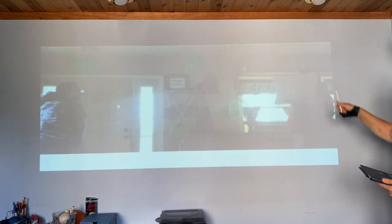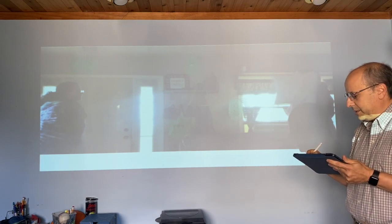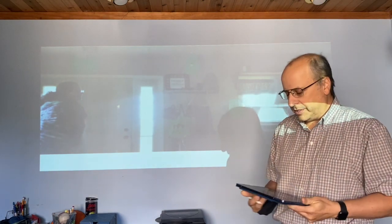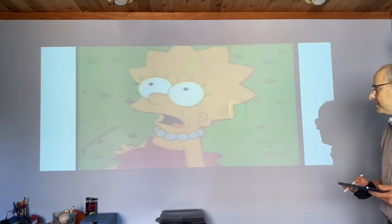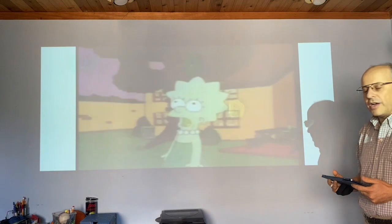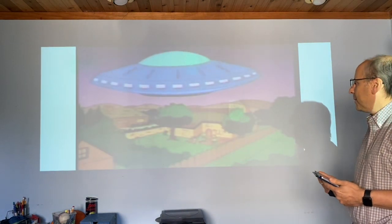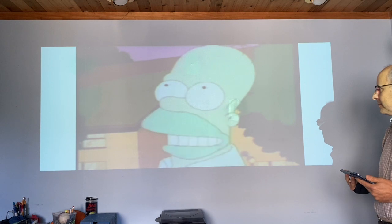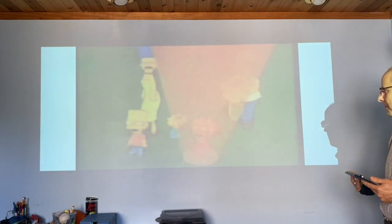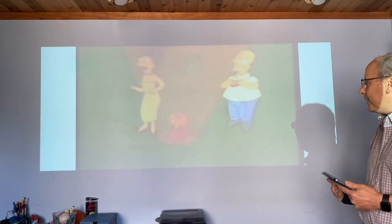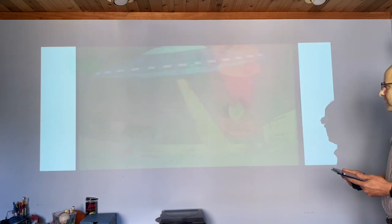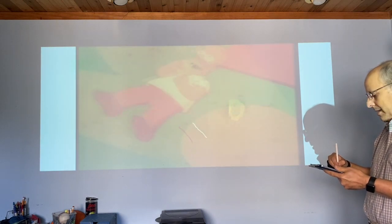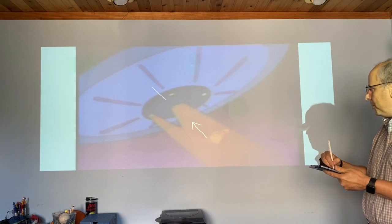Here we have a person getting hit with a pillow — the pillow applies a force to them and they apply a force back to the pillow: equal and opposite forces. Here we have a spaceship trying to lift up the Simpson family. You see the spaceship lifting them off the ground, and when it tries to lift Homer, we can see the third law very clearly. As the spaceship pulls up on Homer, Homer pulls down on the spaceship — equal and opposite forces.